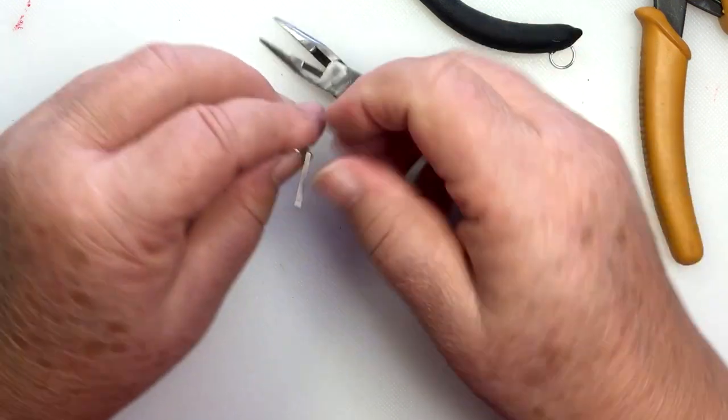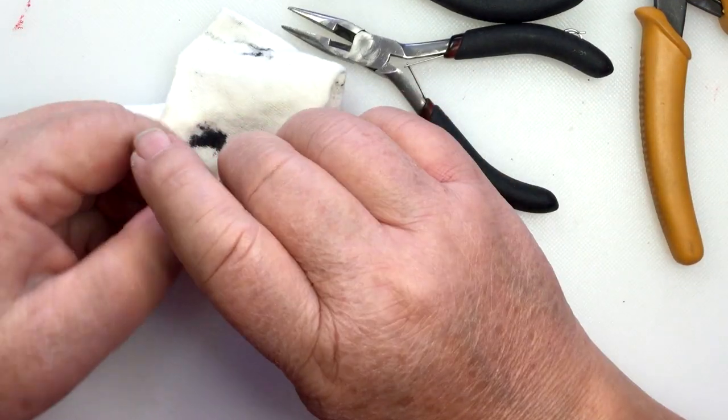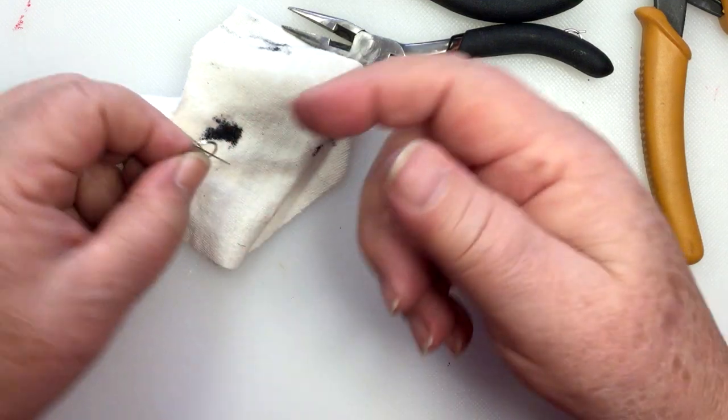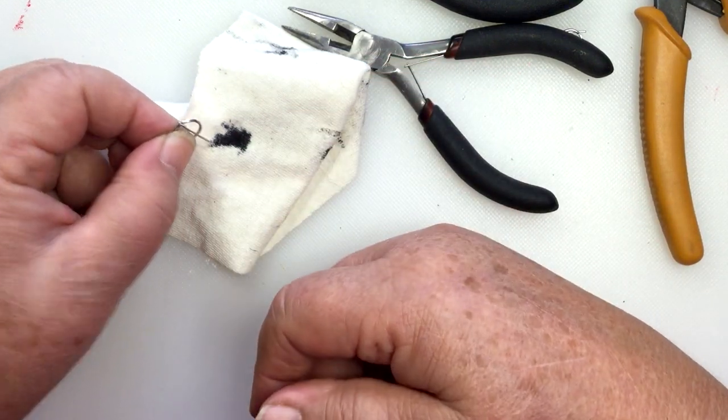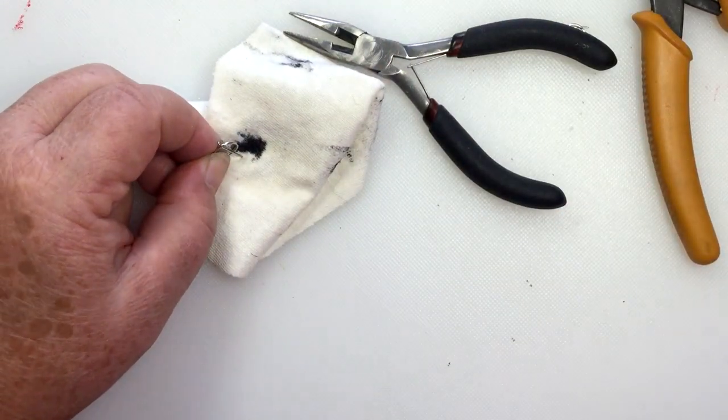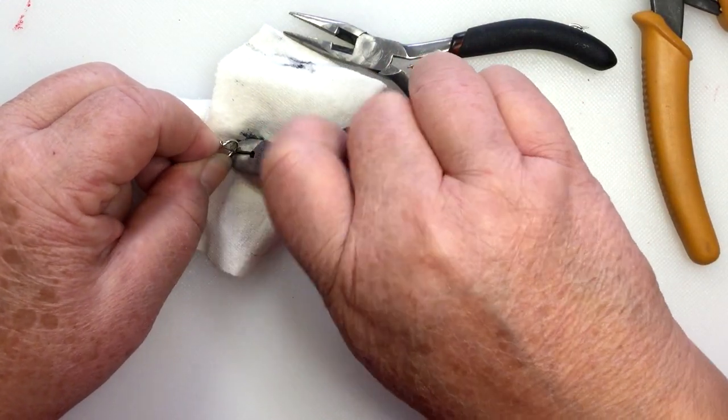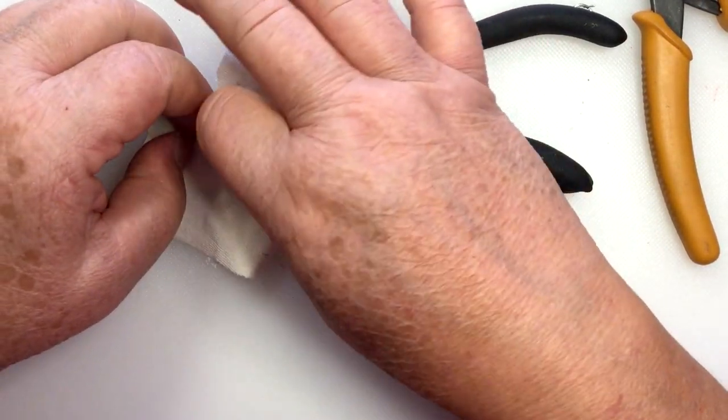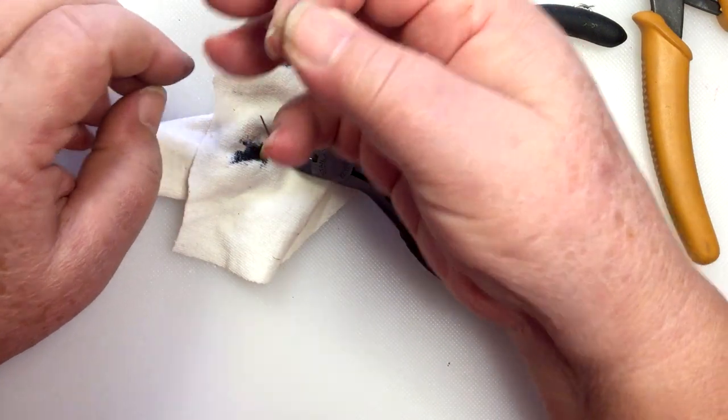Then I'm gonna take another pair of tooth pliers and I'm gonna go ahead and close it. And then we're gonna get rid of that tip because it's way too long, but I don't want to make it too short. So I'm gonna push it into this fabric that I'm using to hold that point down and I'll go ahead and clip it flush with that jump ring.